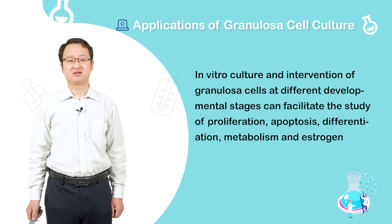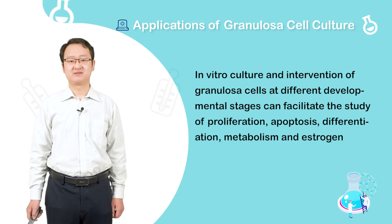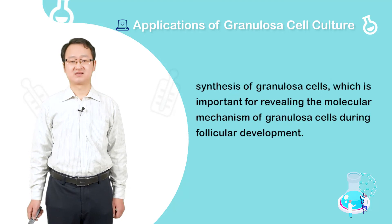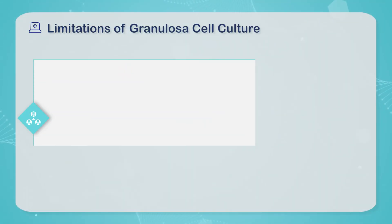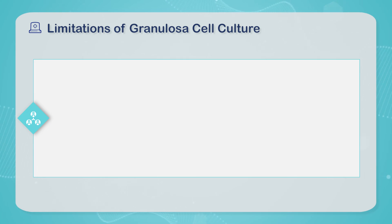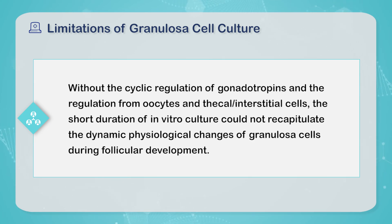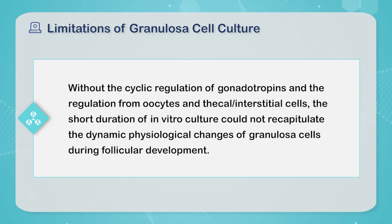In vitro culture and intervention of granule cells at different developmental stages can facilitate the study of proliferation, apoptosis, differentiation, metabolism, and estrogen synthesis of granule cells, which is important for revealing the molecular mechanisms of granule cells during follicular development. Finally, regarding the limitations: without the cyclic regulation of gonadotropins and the regulation from oocytes and theca interstitial cells, the short duration of in vitro culture could not recapitulate the dynamic physiological changes of granule cells during follicular development.